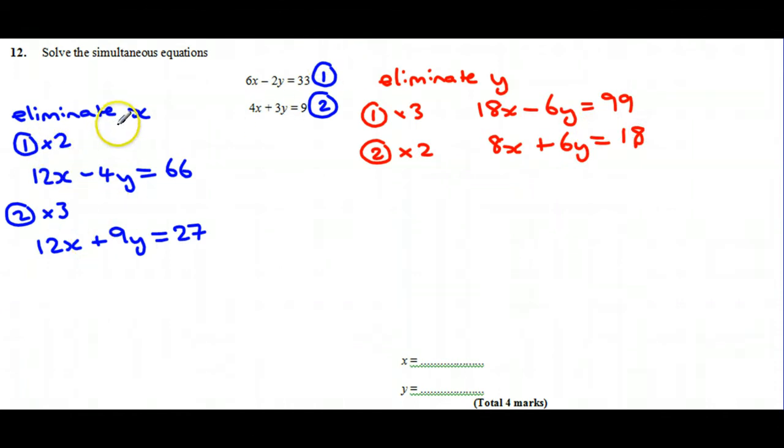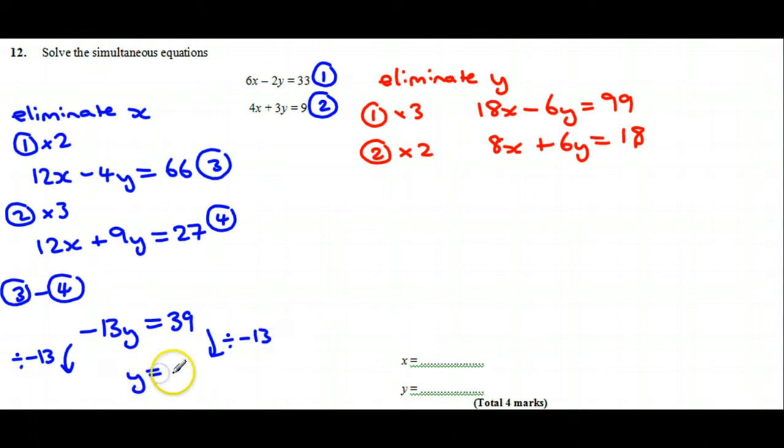Now, in the first option where we eliminate x, there's 12x and 12x—they're both positive. So if I call this one 3 and this one 4, I'll need to do equation 3 minus equation 4. So 12x minus 12x will cancel each other out. Minus 4y and then take away 9y leaves us with minus 13y. And I need to do 66 take away 27, or 66 take away 7 will be 59, and then take away a further 20 will be 39. If we divide by minus 13...